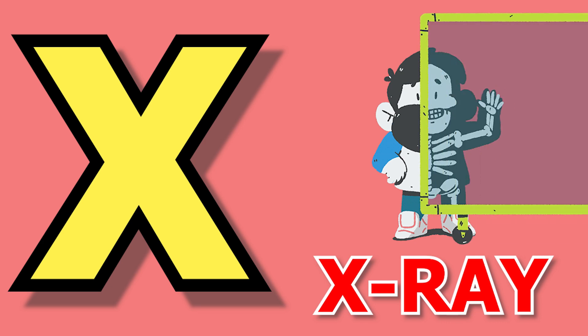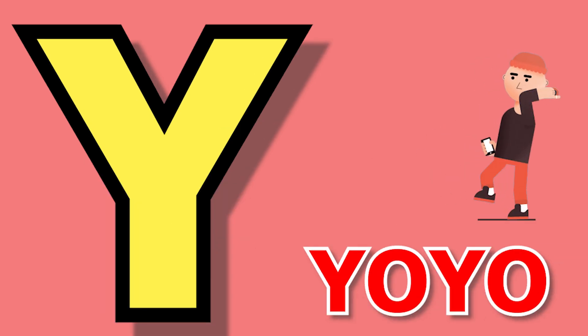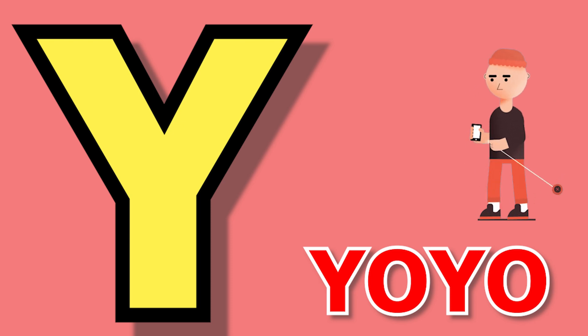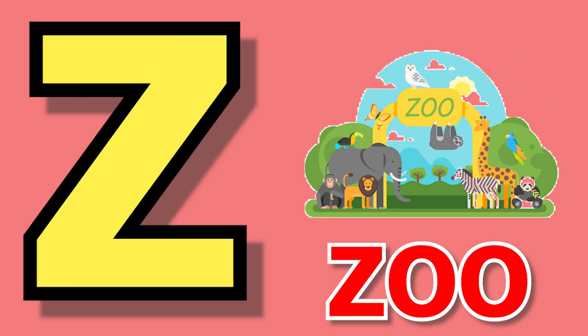Y for yo-yo, yo-yo means yo-yo. Z for zoo, zoo means chidhya ghar.